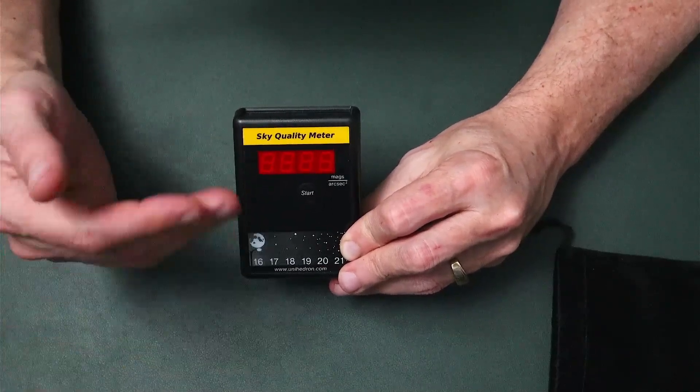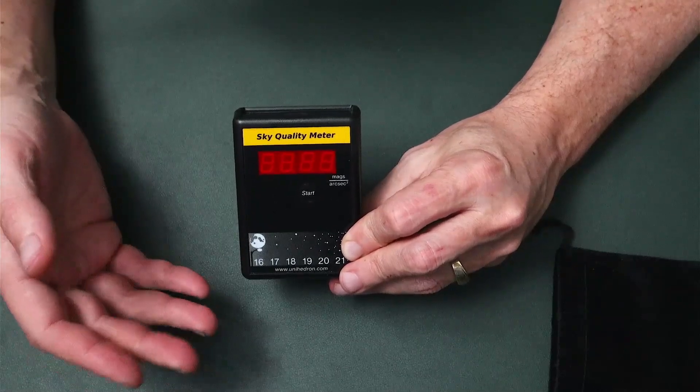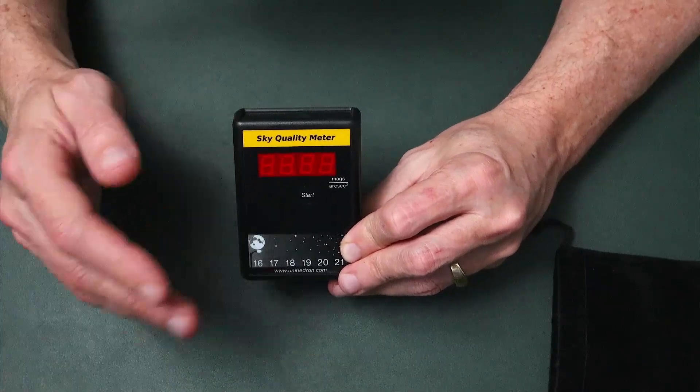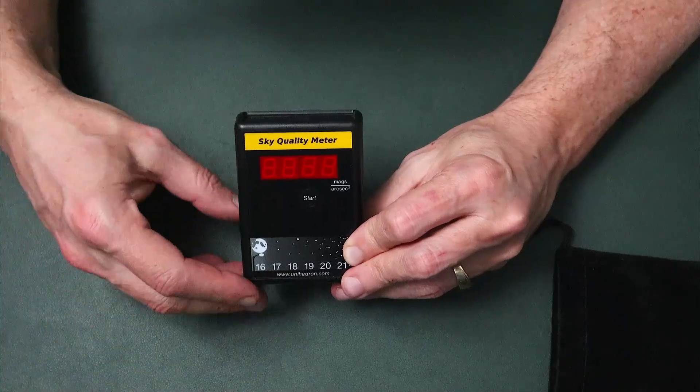But if after 80 seconds it couldn't determine the brightness of the sky because it was too dark, it'll stop beeping. And really the only reason that you would hit a situation like that is if you were testing this in a room that was completely light-tight, no stray light at all coming from any sources, can't see your hand in front of your face type of deal.